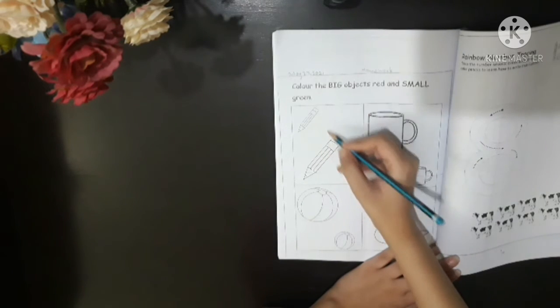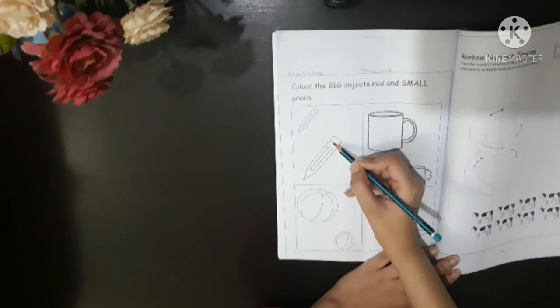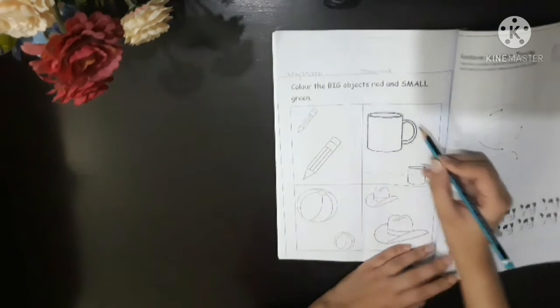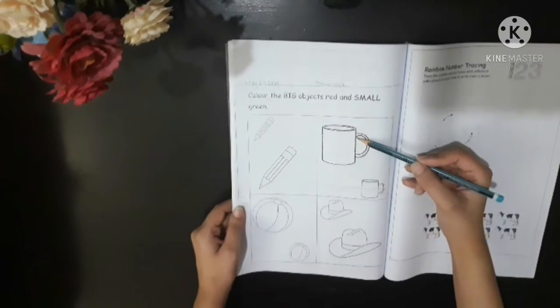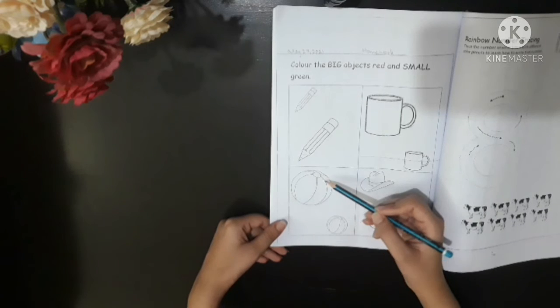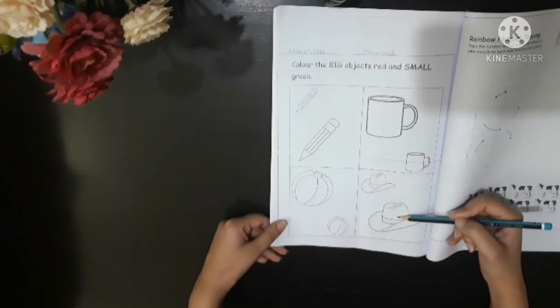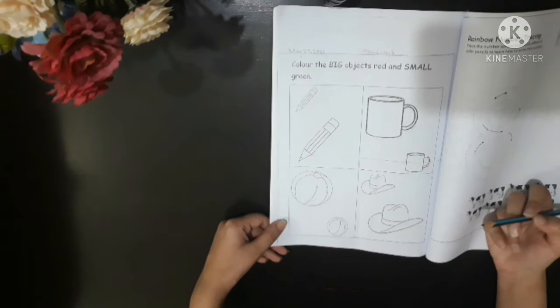Now we've got two pencils. Which one is big? Is this big? No. This is big and this is small. Here, big, small. It's a mug. How about the ball? Big, small. And we've got hats. This one is big and this one is small.